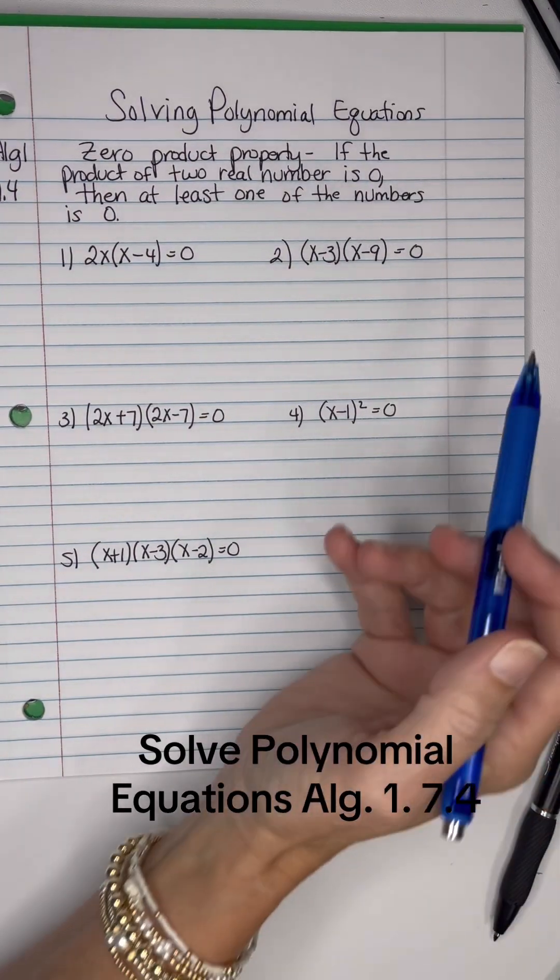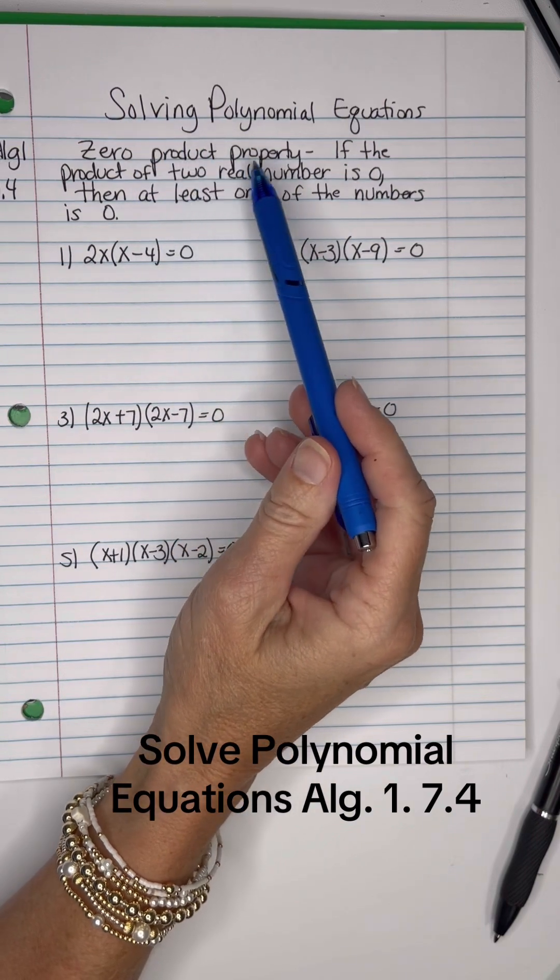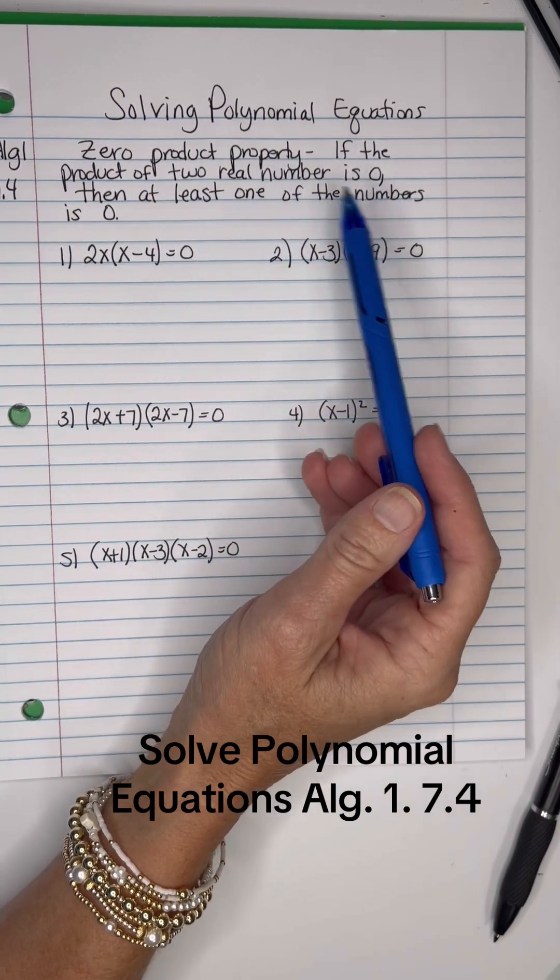We will solve some polynomial equations, and to do so, we need the zero product property. If the product of two real numbers is zero, then at least one of the numbers has to be zero.